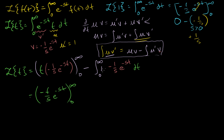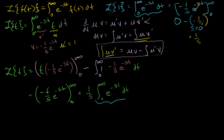Simplifying, this equals minus t over s times e to the minus st, evaluated from 0 to infinity. Bringing the minus 1 over s out front turns the double negative into a plus, giving us plus 1 over s times the integral from 0 to infinity of e to the minus st dt. And this should look familiar — this is exactly the Laplace transform of 1.